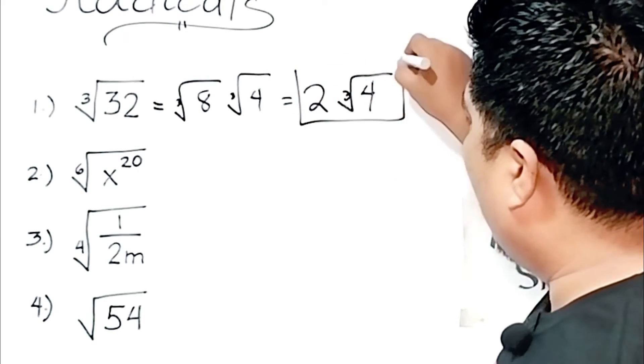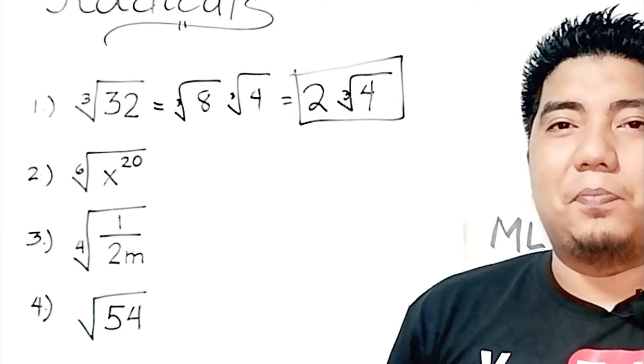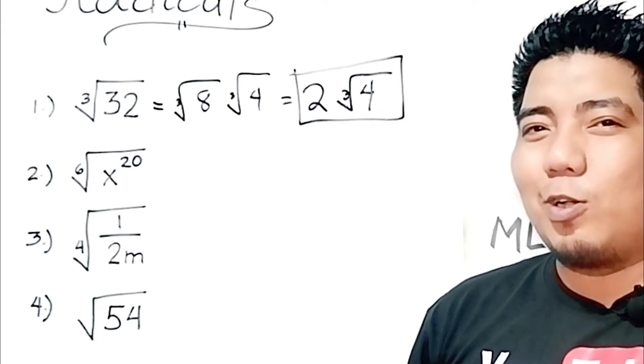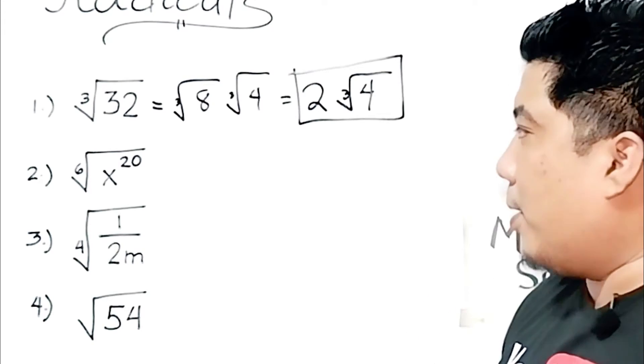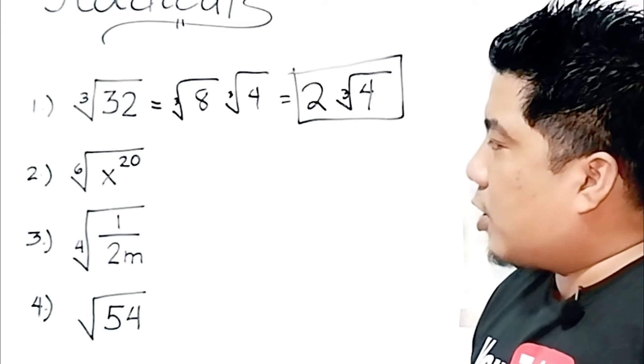The final answer is 2 times the cube root of 4. Easy right? Now let's go to the second problem: the sixth root of x to the power of 20.